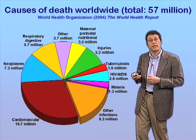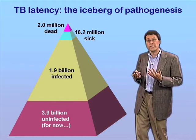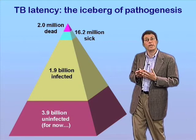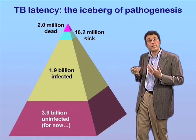Two million deaths a year attributed to tuberculosis is obviously a large number, but it's really only the tip of the iceberg — what I like to call the iceberg of pathogenesis — in terms of its impact on global human health, which is illustrated in this pyramid diagram here. It's a bit like an iceberg: we tend to focus on the bit that shows above the waterline, the tip of the iceberg, but it truly is only part of the problem.